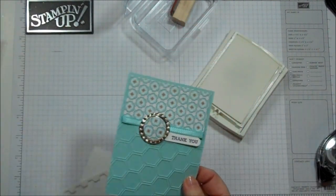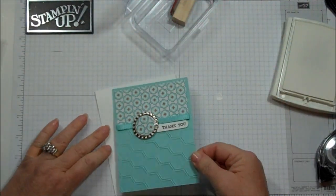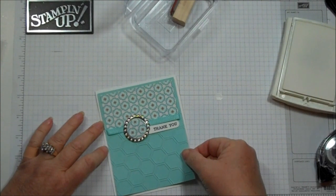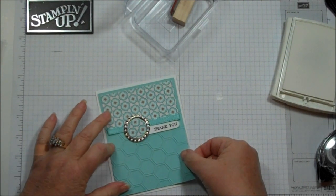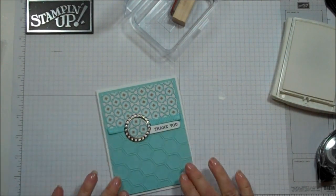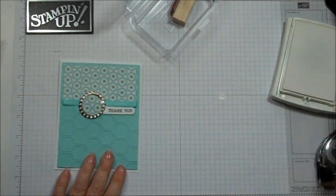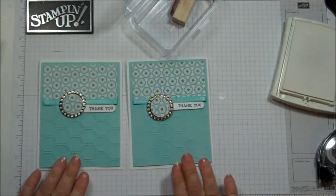Okay. Then you just take your Whisper White piece and layer it right onto the base. Just like that. Isn't that cute? I love those bottle caps. So cute. Okay. So that's it.